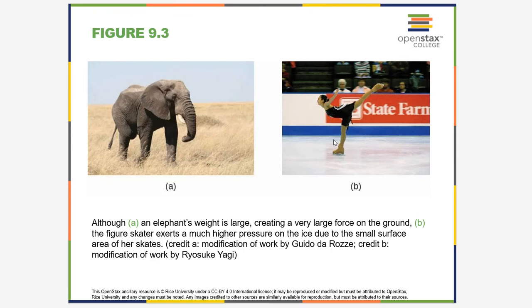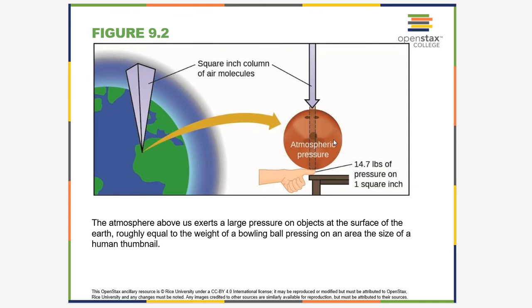Gases also exert pressure. A gas exerts pressure of 14.7 pounds of pressure on one square inch — this is called 14.7 pounds per square inch, or psi. So 14.7 psi is 14.7 pounds per square inch. If you fill your tires, the gauge you use might be in units of psi in the United States.